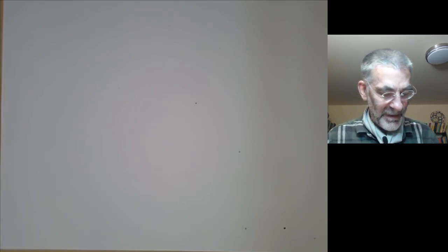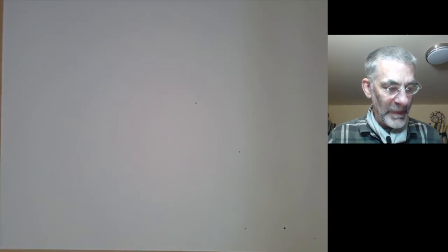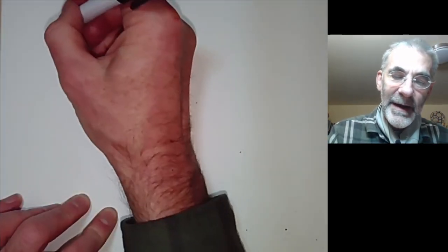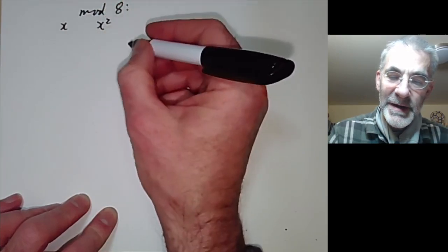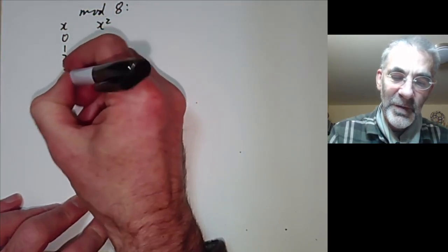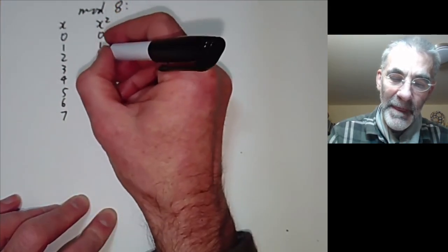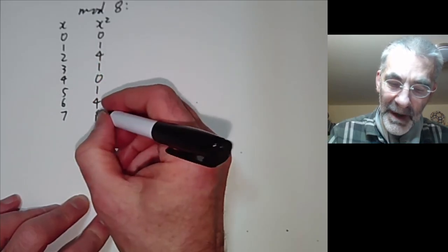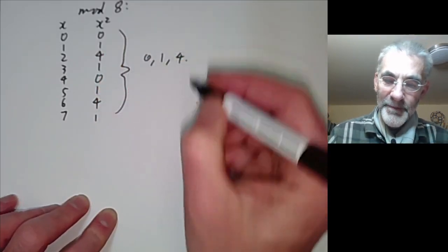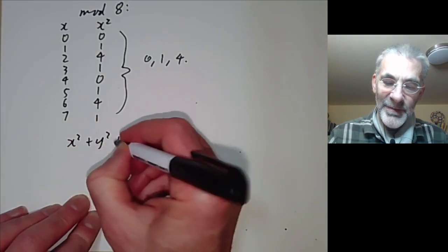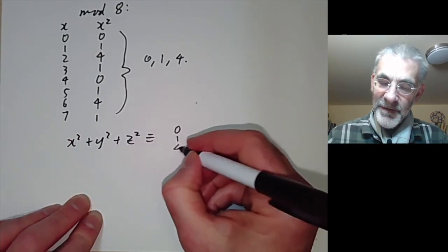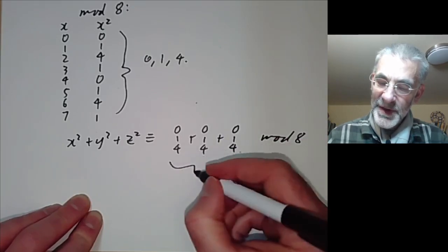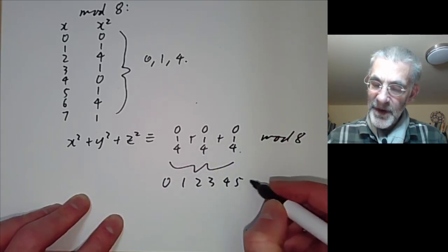What about sums of three squares? This time we look modulo 8. If we compute x squared modulo 8 for x from 0 to 7, we get the values 0, 1, 4, 1, 0, 1, 4, 1 — so any square is always 0, 1, or 4 modulo 8. Therefore x squared plus y squared plus z squared must always be congruent to one of 0, 1, 2, 3, 4, 5, or 6 modulo 8. The value 7 is missing.